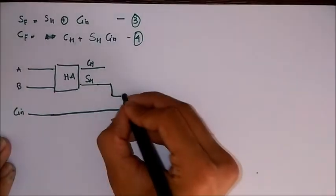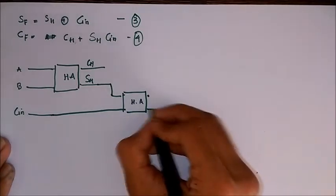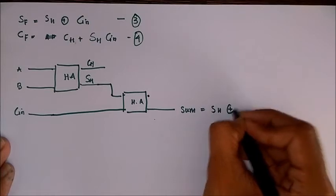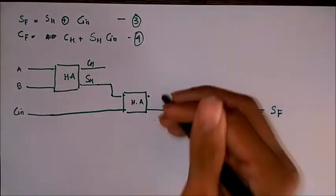So Cin and SH we give as input to a half adder. So here we will get a sum which is SH XOR Cin is equal to SF. So we got the sum of the full adder.